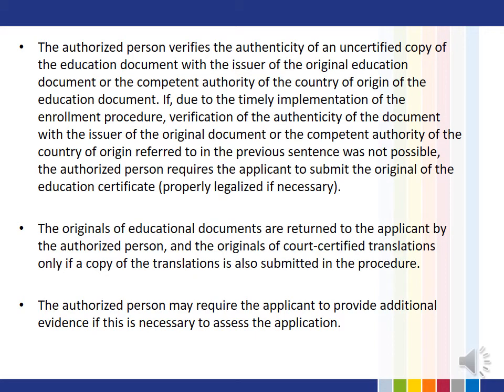The authorized person verifies the authenticity of the education certificate with the issuer of the original education document or the competent authority of the country of origin. If, due to the timely implementation of the enrollment procedure, verification was not possible, the authorized person requires the applicant to submit the original education document properly legalized. The originals of educational documents are returned to the applicant, and originals of court-certified translations are returned only if a copy of the translations is also submitted. The authorized person may require the applicant to provide additional evidence if necessary to assess the application.